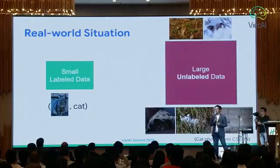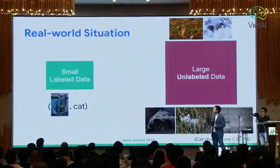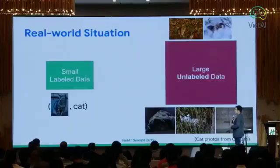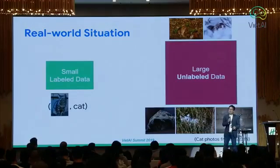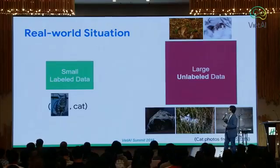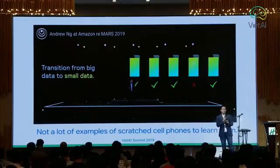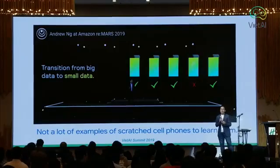In real-world situations, a lot of the time you only have little data — just a small amount of labeled data. For example, in healthcare, you don't always have lots of labeled data; you need people to look at the data, to annotate it — it's very costly. But on the contrary, you have a lot of unlabeled data. Recently, Andrew Ng at an Amazon event also talked about the importance of going from big data into small data. I think techniques that work on small data are also very important.